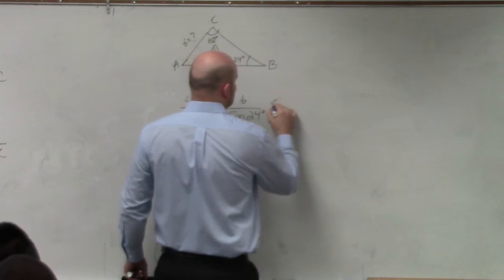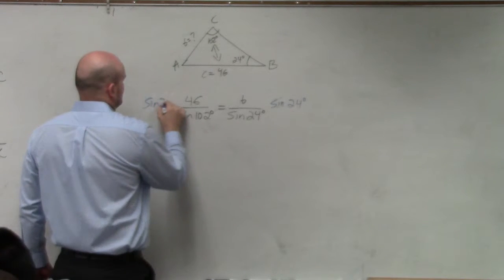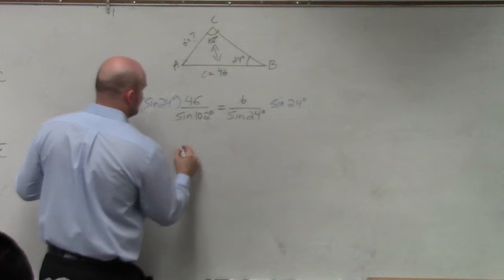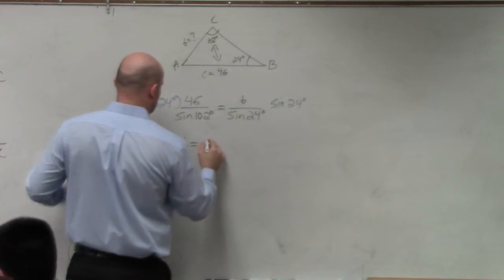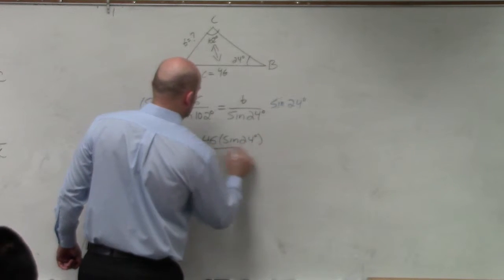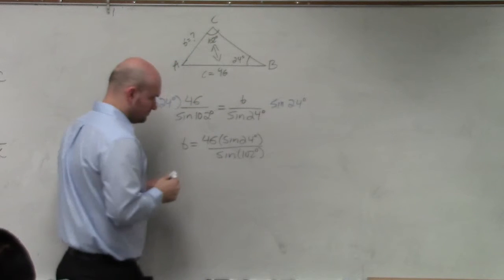So I multiply by the sine of 24 on both sides. And therefore, my answer is b is going to equal 46 times the sine of 24 degrees all over the sine of 102 degrees.